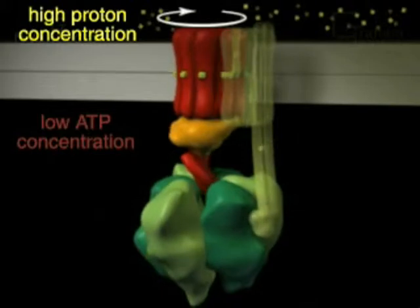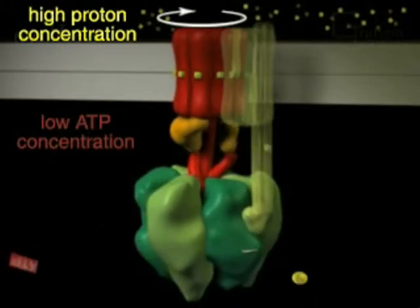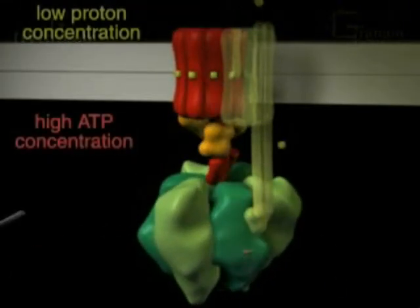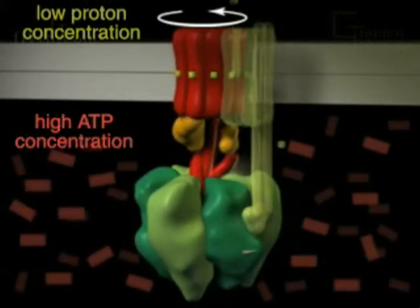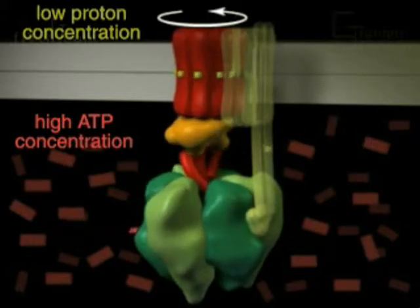Like any enzyme, ATP synthase can work in either direction. If the concentration of ATP is high and the proton gradient low, ATP synthase will run in reverse, hydrolyzing ATP as it pumps protons across the membrane.